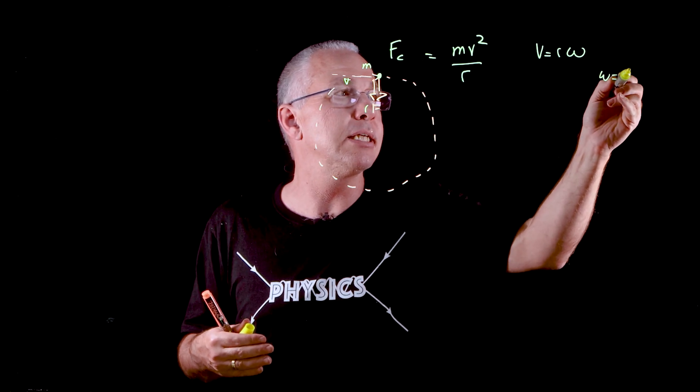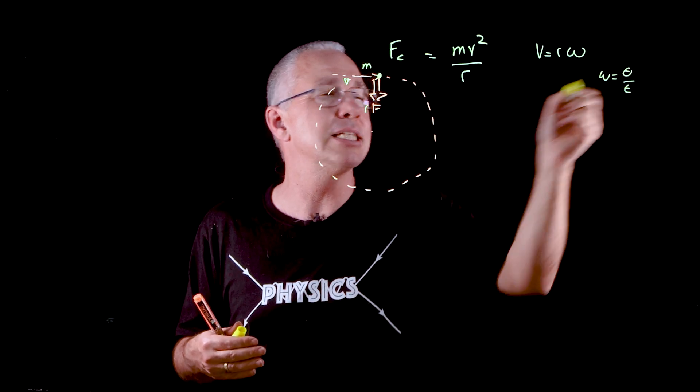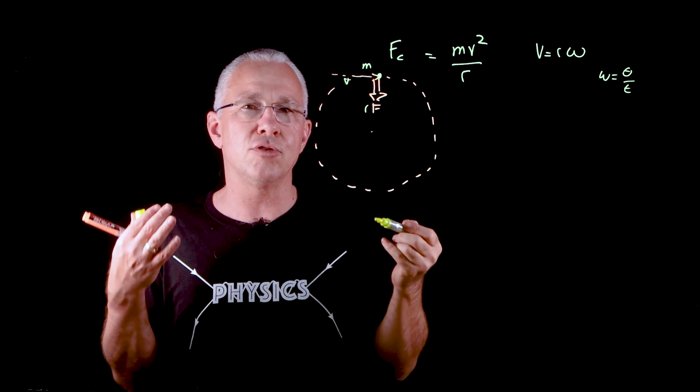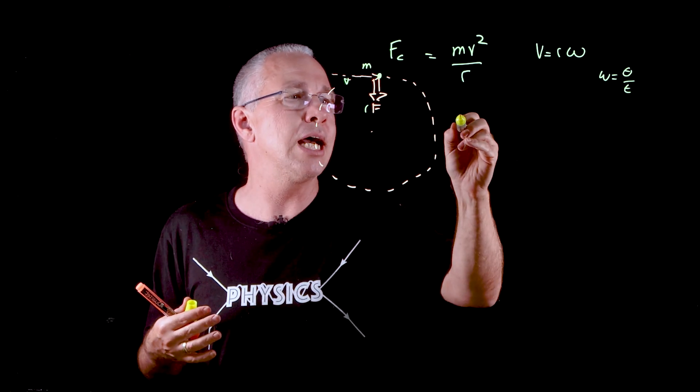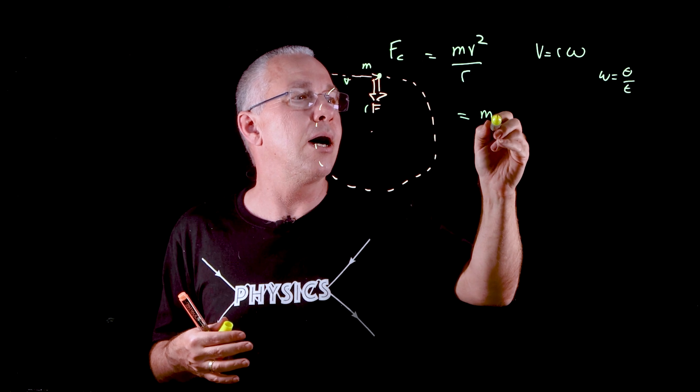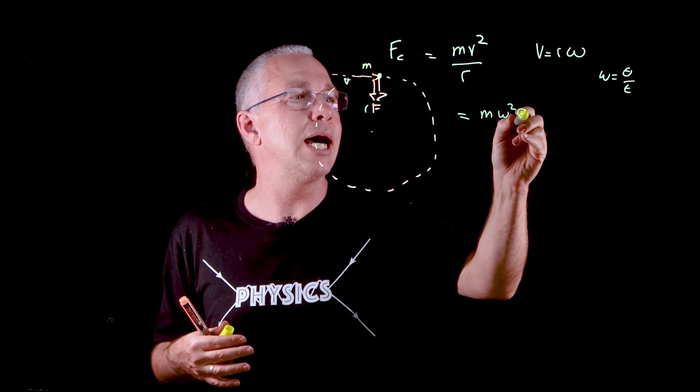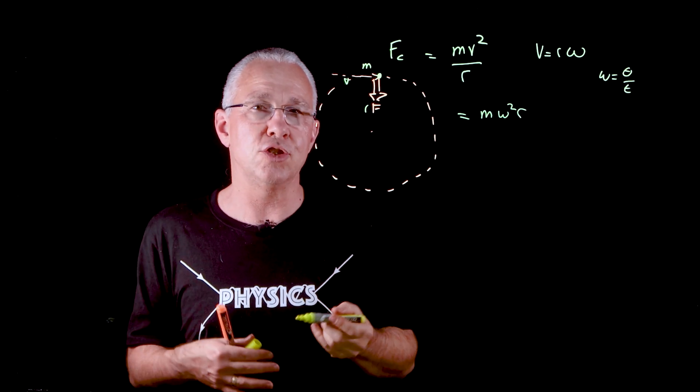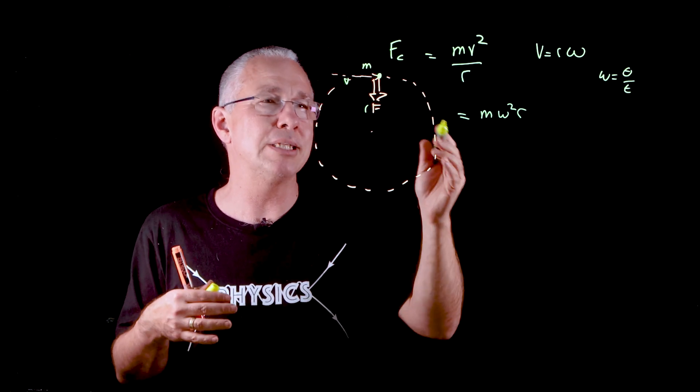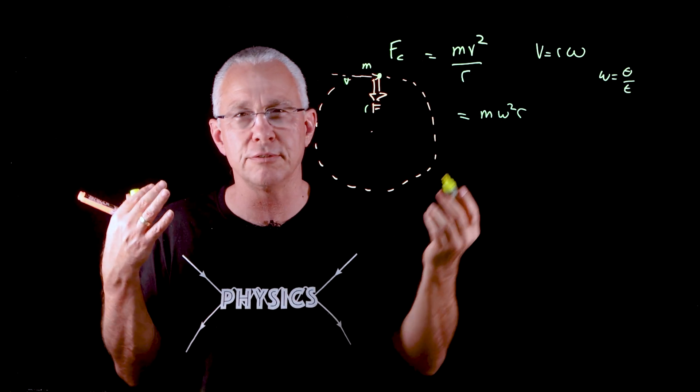In other words, omega is basically delta theta over T, measured in terms of radians. So now we have a new formula: M omega squared R as our centripetal force. But now we're talking about rate of change of angle.